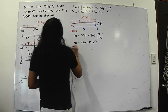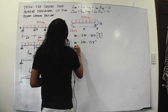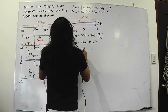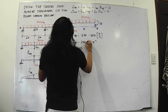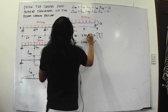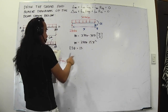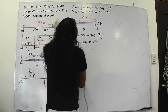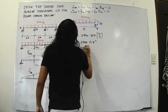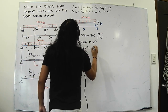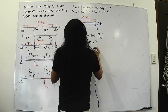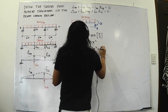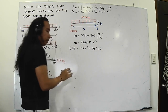Integrating the moment equation, we get EI·θ equal to 270x minus 15x² integrated, giving 135x² minus 5x³ plus C1.